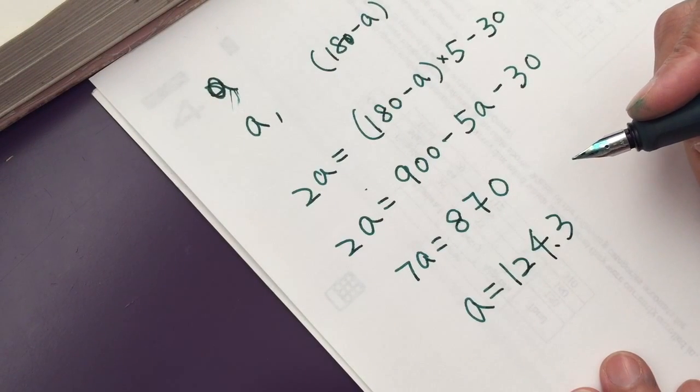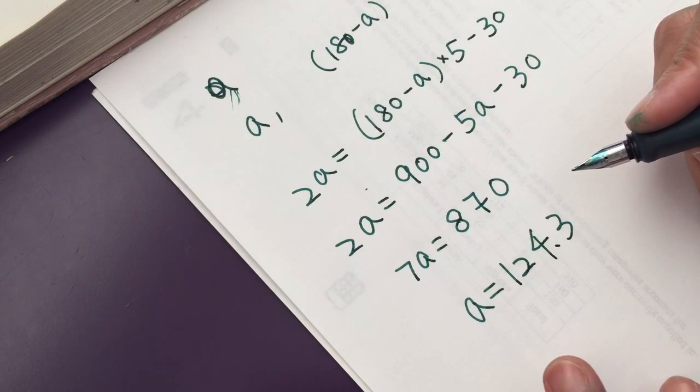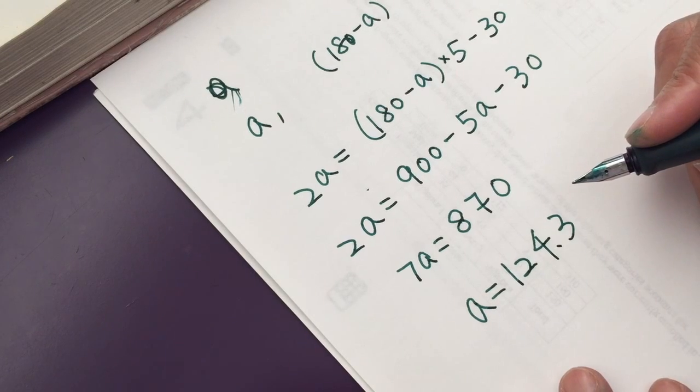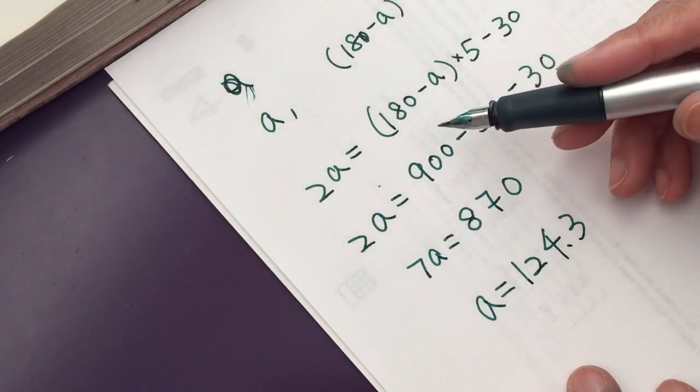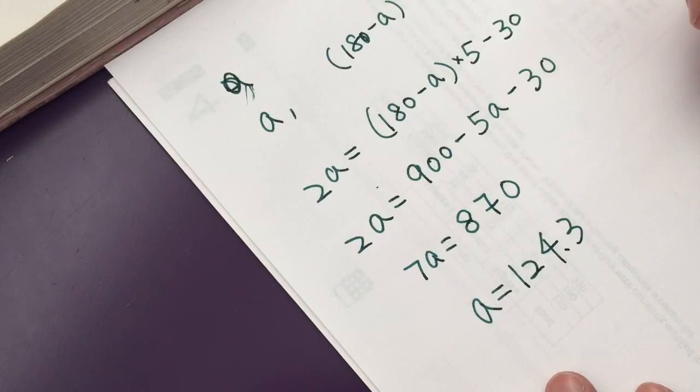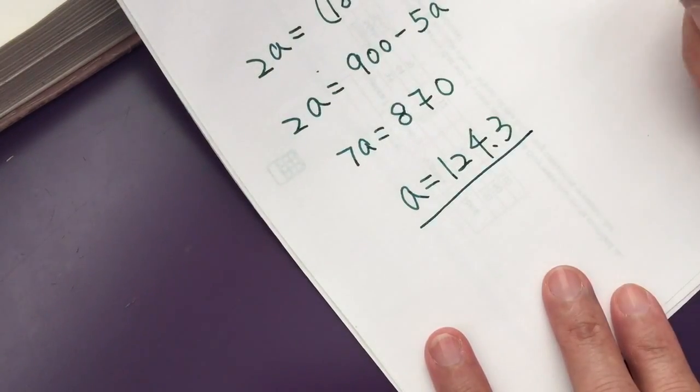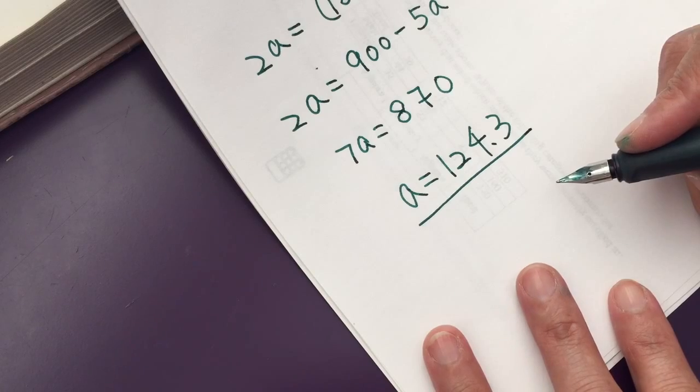Now let's go back and see if it is right. Twice the measure of an angle is 30 less than 5 times the measure of its supplement. Okay, so this is the measure of...